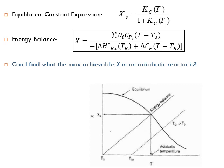Can we find the maximum achievable conversion in an adiabatic reactor? In other words, what is the maximum achievable conversion — which is the equilibrium conversion — that can be achieved in a reactor operated adiabatically? We're not talking about a reactor with a specific volume; we're asking what the maximum is if the reactor were long enough. Let's look at the energy balance equation.